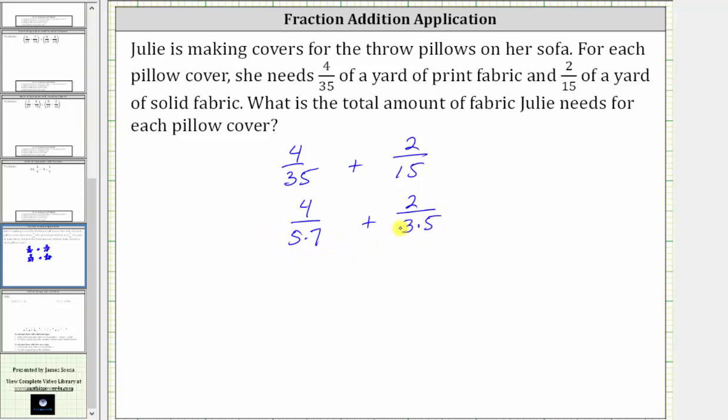So looking at the two denominators, notice how the second denominator has a factor of 3, but the first denominator doesn't. So what we'll do is multiply the numerator and denominator by a factor of 3. Notice now this first denominator contains all the prime factors of the second denominator.